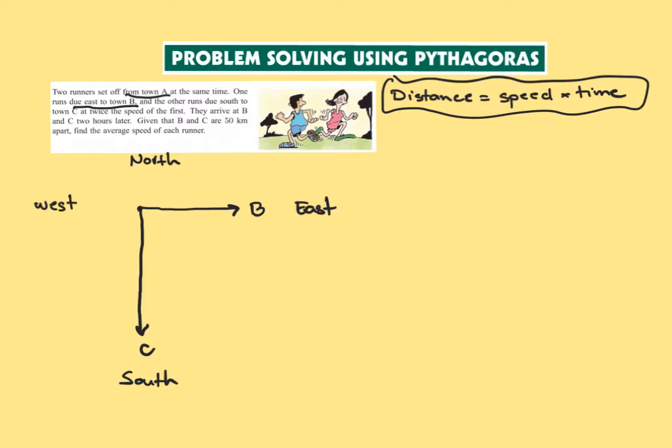Okay, so we know where they're running and what else is given. The other runs south to town C at twice the speed of the first one. So if the first one speed is equal to x, then the second one, the speed is equal to 2x, twice the speed.